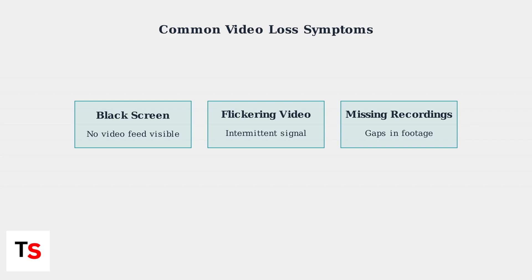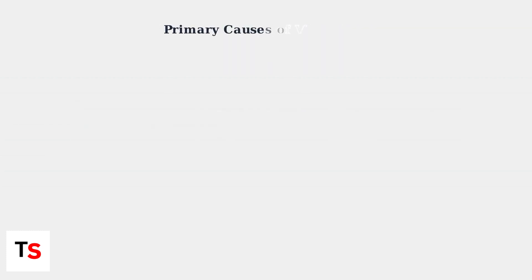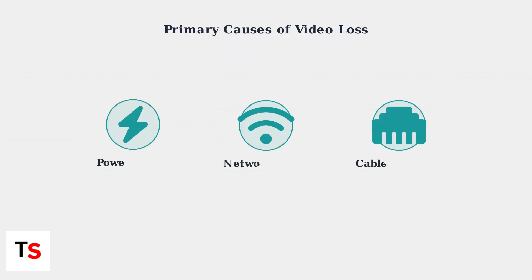These symptoms indicate that the video signal is being interrupted somewhere in the system. The primary culprits behind video loss are power supply problems, network instability, and cable malfunctions. Understanding these three main categories will help you systematically diagnose your issue.